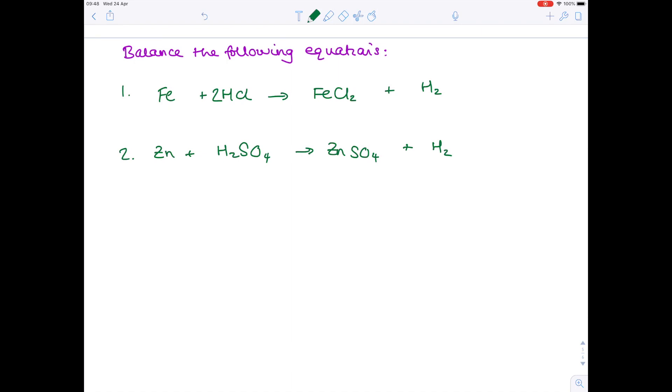Now let's check this one out. So we've got zinc, one on each side, two hydrogens on each side, one sulfur on each side, four oxygens on each side. It's a trick question. It's already balanced.